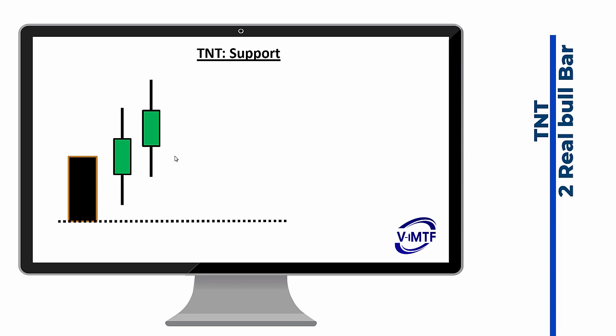We're going to look at which TNT highs and lows in the past will come back and haunt our current situation. We'll take the same method we used on the IMTF side to determine if IMTF crosses are support or resistances, or if they need to be tested in the future. The difference is that the TNT has two sides to it, whereas the IMTF only has one.